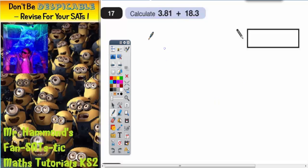Question number 17. Now this looks at first sight like it's going to be nice and easy. Calculate 3.81 add 18.3.